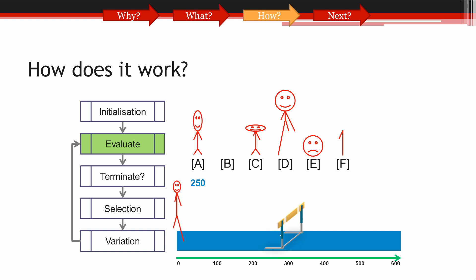Now it's solution B's turn. It appears that solution B has made it past the hurdle and achieved a fitness score of 350. Now for solution C. It appears that solution C's wide head has prevented it from getting closer to the hurdle, so it settles for a fitness score of 240.